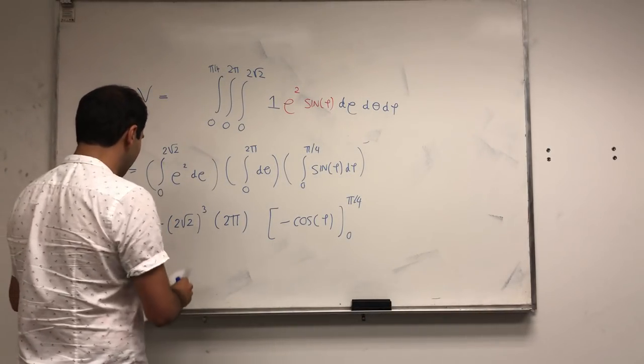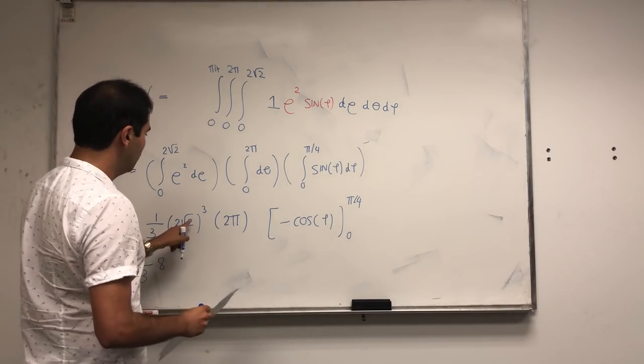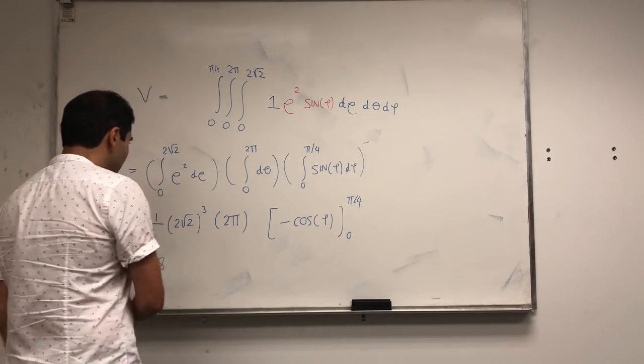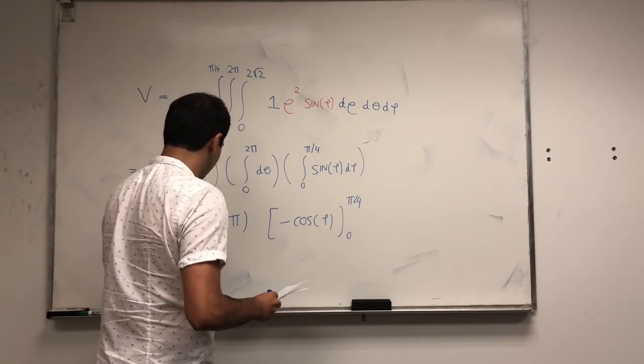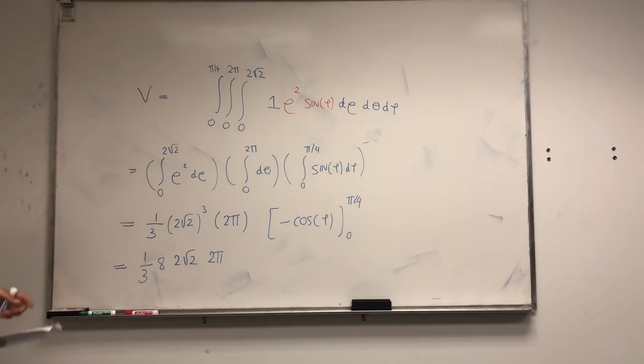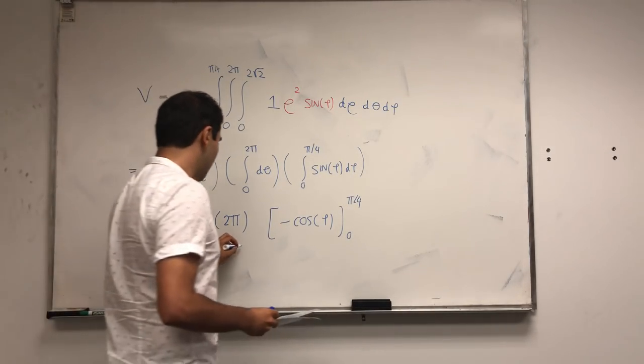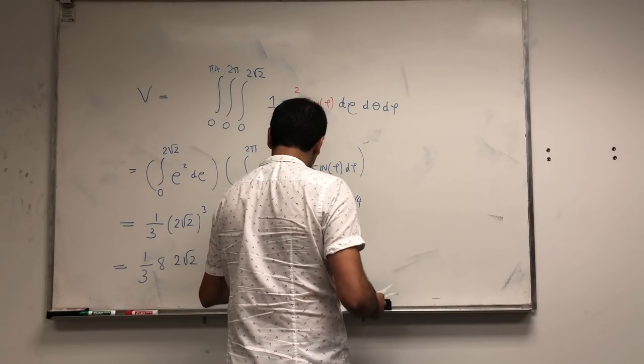Let's simplify this a little bit. So one-third times eight root two cubed, that is I think two root two. And then two pi. And then so minus cosine of phi, so I guess one minus square root of two over two.